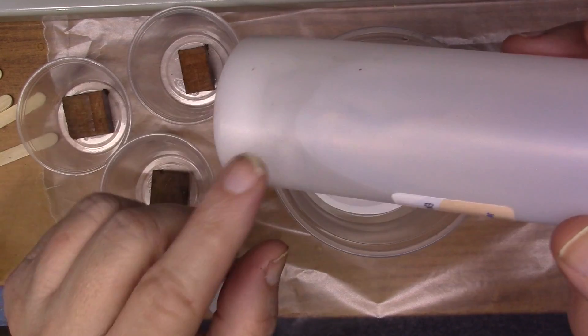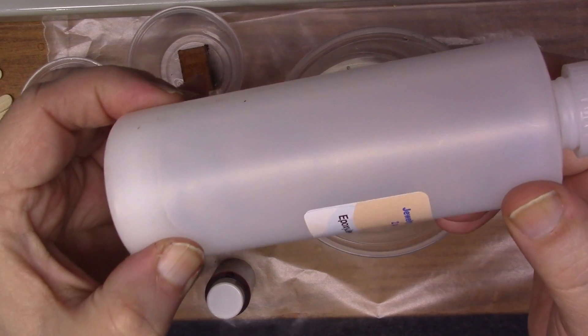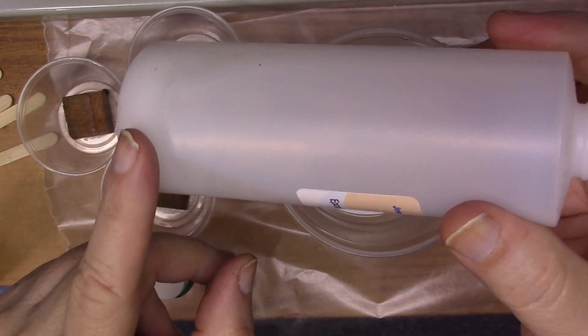This is when your epoxy crystallizes in the bottom of the bottle. It looks whitish and it's kind of solid. This is not a big deal.